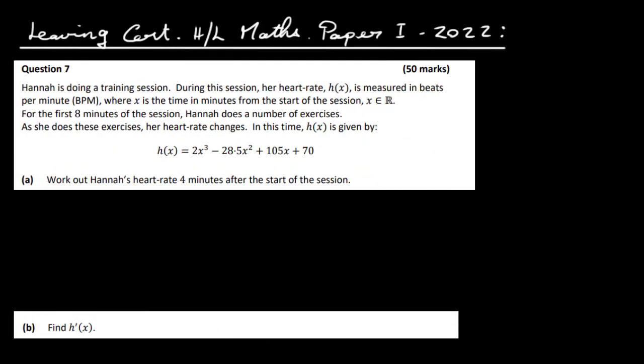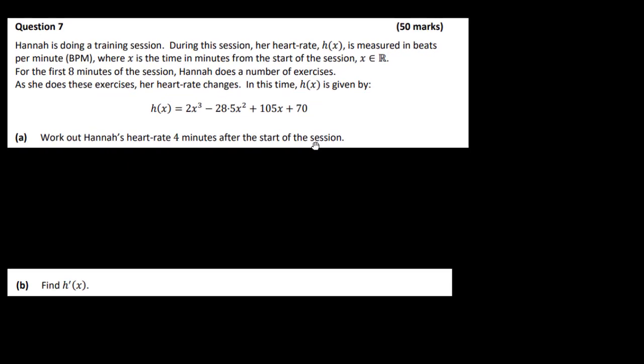Let's have a look at the Leaving Cert Higher Level Maths Paper 1 for 2022, Question 7. Hannah is doing a training session. During this session her heart rate h is measured in beats per minute, where x is the time in minutes from the start of the session. For the first 8 minutes Hannah does a number of exercises and her heart rate changes. We have to work out Hannah's heart rate 4 minutes after the session has started.